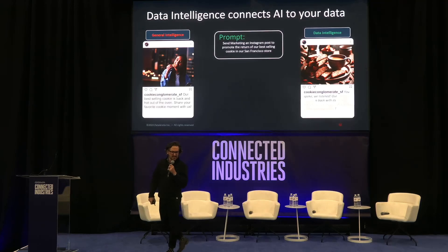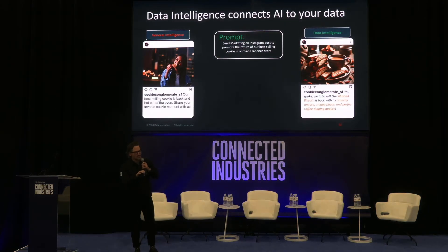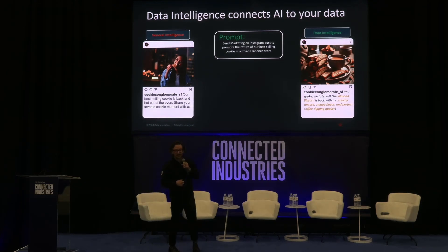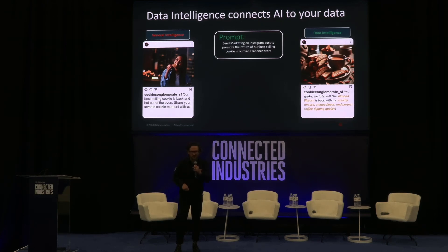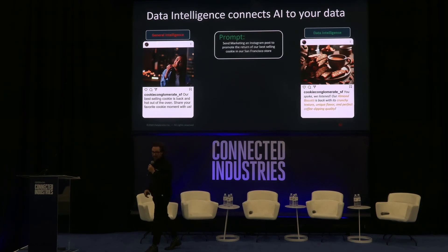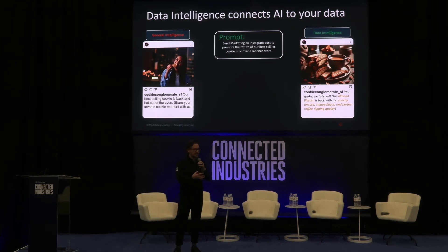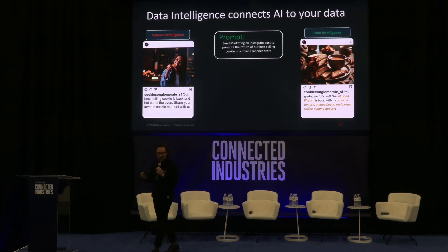So what do I mean by data intelligence? Imagine you're the business leader of a chain coffee shop with stores across the US, and your marketing department says they'd like to use generative AI to create some social posts about the best-selling cookie in your San Francisco store. If you were to try and use a general intelligence platform like ChatGPT, you're going to get a very generic response — because it's trained on the internet of data, not on your data. Training on your data is actually a huge and important point.